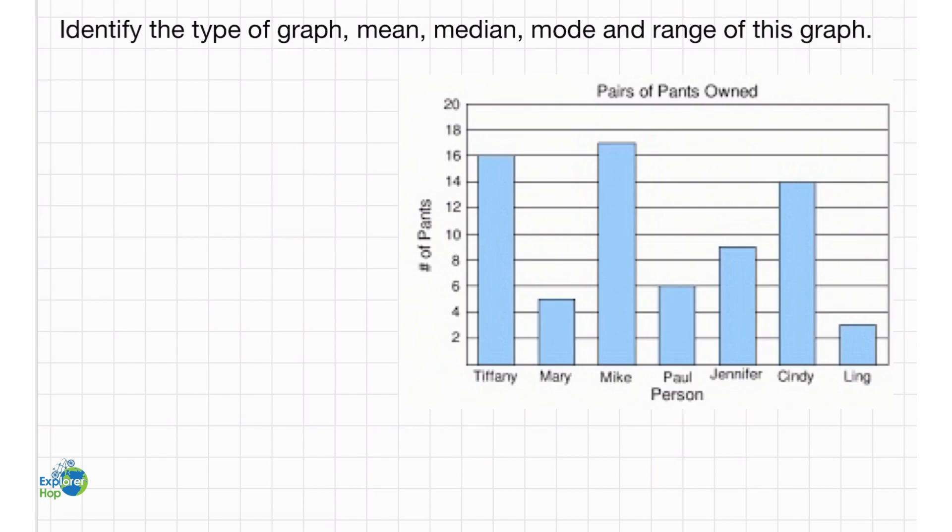So let's start with identifying the type. Well, we see that there are bars in this graph. Therefore, it should be a bar graph, histogram, or multibar graph. Now, there is only one type of bar, so it can't be a multibar graph. And there is no range in the horizontal axis, therefore it cannot be a histogram. So, it's a bar graph.